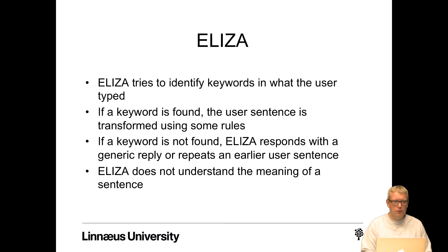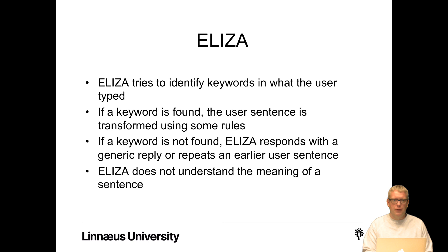ELIZA works like this: it tries to identify keywords in what the user typed. If a keyword is found, the user's sentence is transformed using some rules. If a keyword is not found, ELIZA responds with a generic reply or repeats an earlier user sentence. ELIZA does not understand the meaning of a sentence, yet still many believed in the 1960s that such a system could be used instead of psychiatrists as a communication partner.